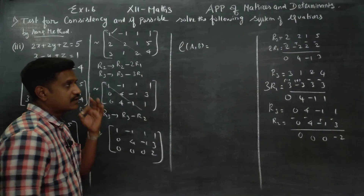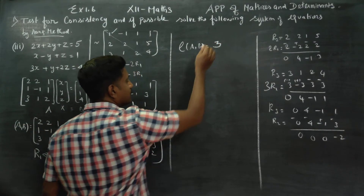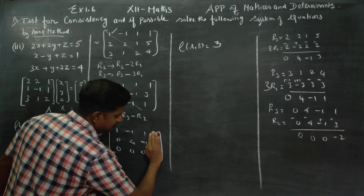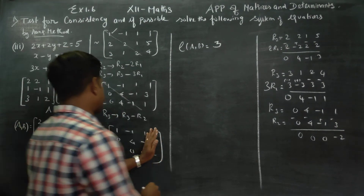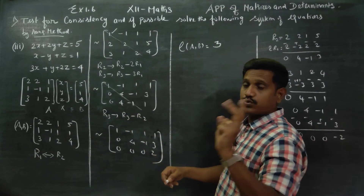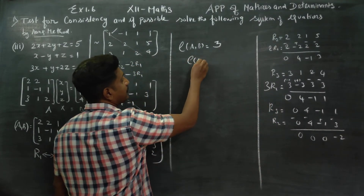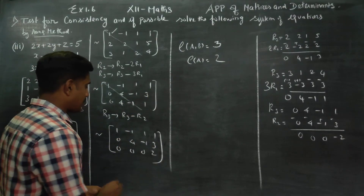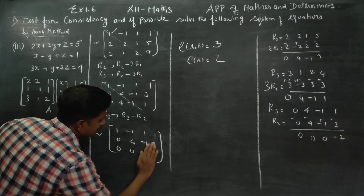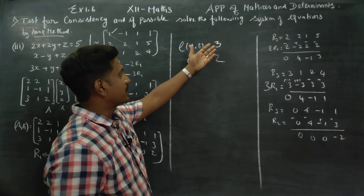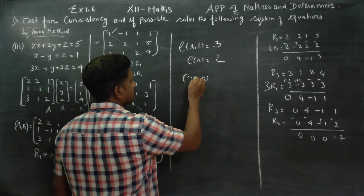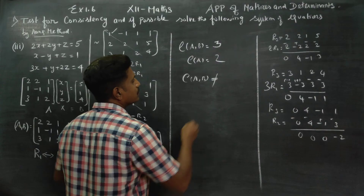The rank of [A|B] is 3, since there are three non-zero rows. Now close off the b column and count non-zero rows for matrix A. Rows 1 and 2 are non-zero, but row 3 becomes a zero row for A. So the number of non-zero rows is 2, meaning rank of A is 2. Rank of [A|B] is not equal to rank of A.